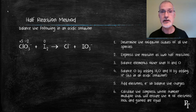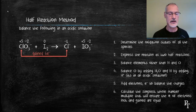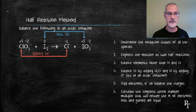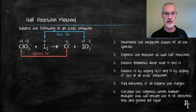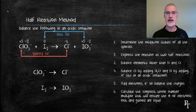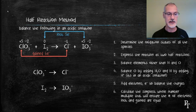To begin, I'll determine the oxidation states of all the species involved, listed above each of the elements. We can see that the chlorine has gained electrons, so it's undergone reduction. The iodine, on the other hand, has lost electrons and undergone oxidation. I'm now going to divide this reaction into two half reactions — one will be oxidation, the other reduction.